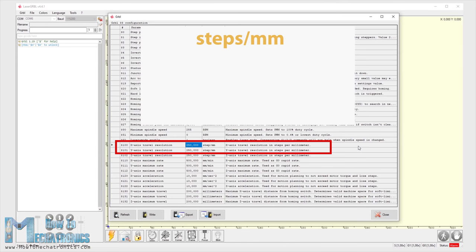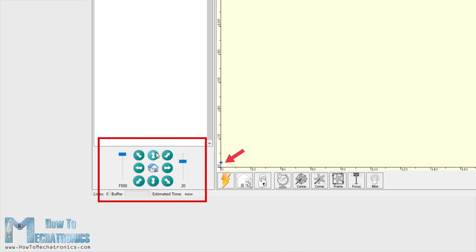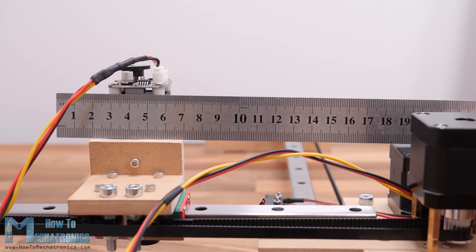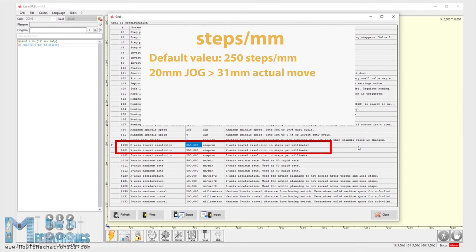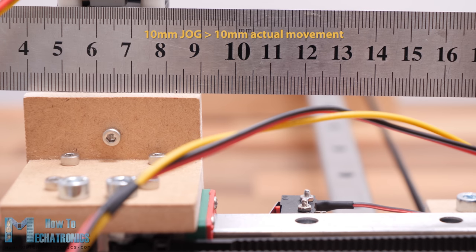Here's how we can calculate these values for our machine. The default values here are usually 250 steps per millimeter. Now we can move the machine using the jog commands, for example 20 millimeters and we should notice how much the machine will actually move. In my case for 20 millimeters jog on the Y axis the actual movement of the machine was 31 millimeters. So 20 divided by 31 equals 0.645 and if we multiply that value with 250 we will get a value of 161.29. So that's the value that we should set as steps per millimeter value for our machine. If we try to move the machine now with the updated values the machine should move the exact distance.